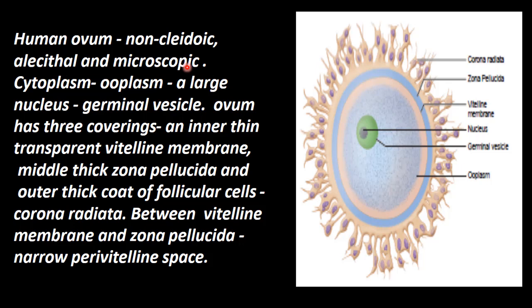It is microscopic — it can be seen under a microscope. The egg's cytoplasm is known as ooplasm, because it is called ovum, so its cytoplasm is called ooplasm. It has got a large nucleus, which is called the germinal vesicle.